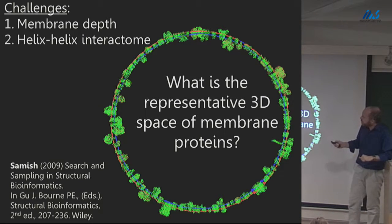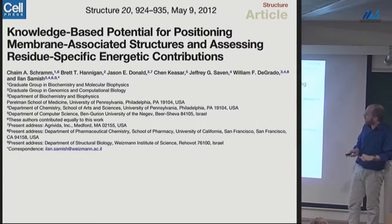We needed a representative data set to do a knowledge-based potential, which is much better, because the set was fine-tuned to what was available, and it was not sufficiently representative. So I worked quite a lot on search and sampling and building a non-redundant data set for membrane proteins, which has rules which are very different from the regular soluble proteins. And I looked on two things, on membrane depth and on the helix-helix interactome.